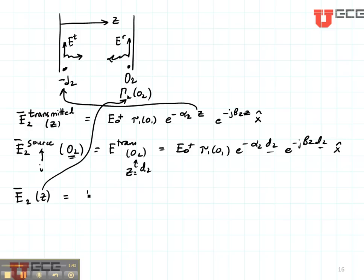So this is going to be E2 source or incident at O2 times E to the minus alpha 2 Z, E to the minus J beta 2 Z. And then we need to have a reflected field here.